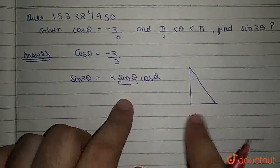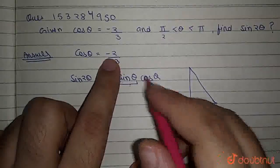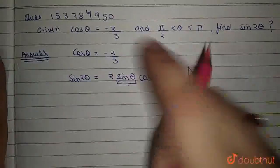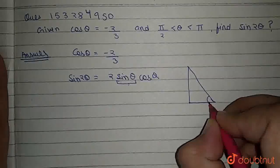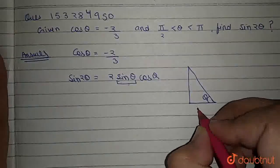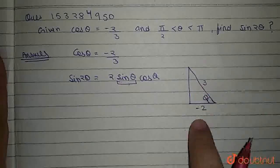We are given cos θ = -2/3. So, we plot it in a graph, let us assume that this is θ, then cos θ is equal to base over hypotenuse.